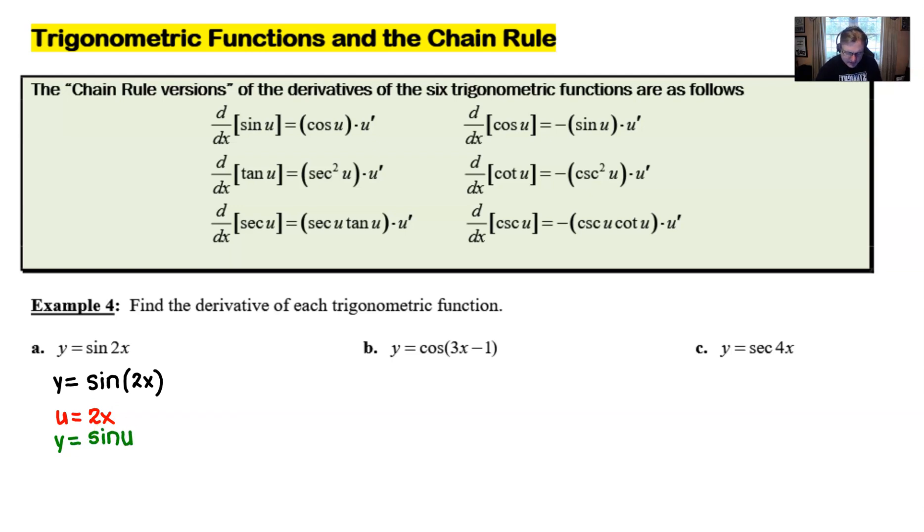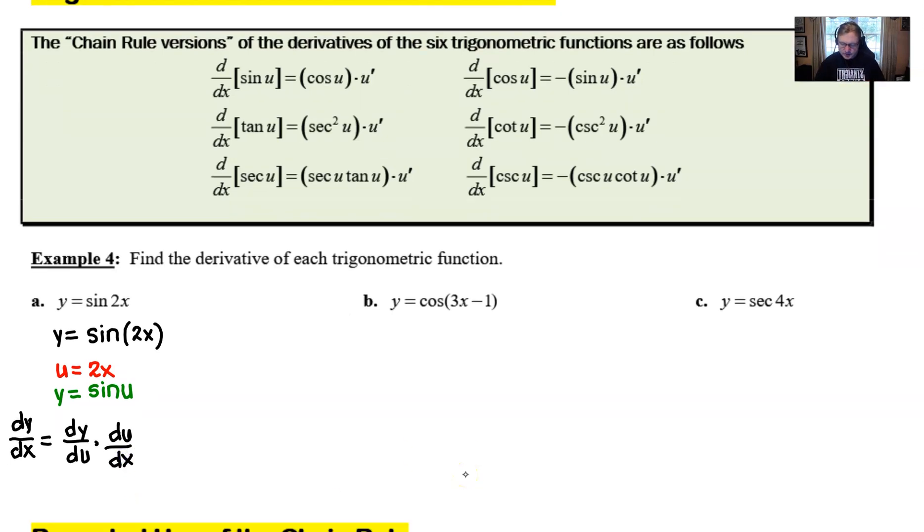And then if you remember, the chain rule was basically saying that if we need to take the derivative of y with respect to x, all we need to do is take the derivative of y with respect to u and multiply that by the derivative of u with respect to x. And we could really do those two derivatives in either order that we choose. So for this particular problem, then the dy/dx would start off with the derivative of y with respect to u, which is the derivative of sine, which we know to be cosine of that u. And then we finish up by multiplying by the derivative of that u, which in this case is the 2.